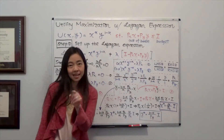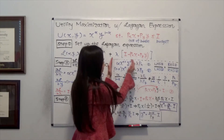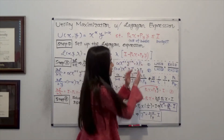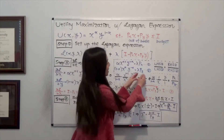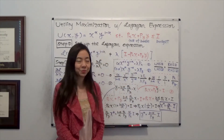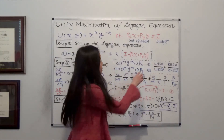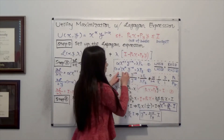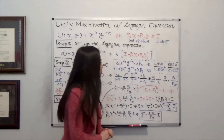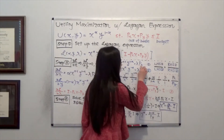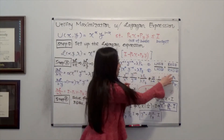My next step is to divide the left-hand side of equation 1 by the left-hand side of equation 2, and set that equal to the right-hand side of equation 1 divided by the right-hand side of equation 2.